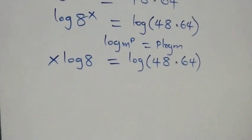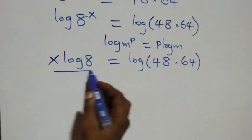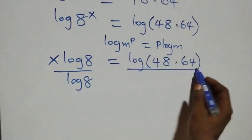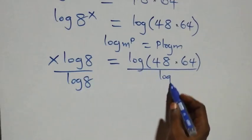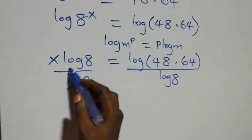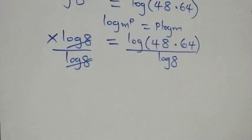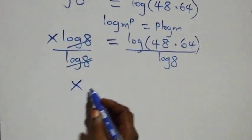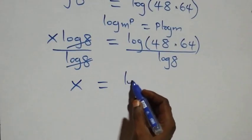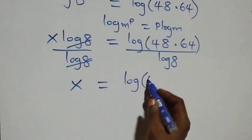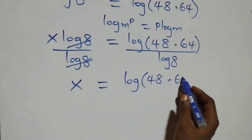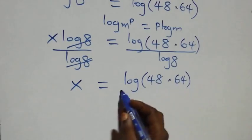From here we divide both sides by log eight. Log eight cancels on the left, and we are left with x equals log of forty-eight times sixty-four over log eight.